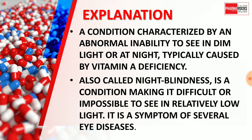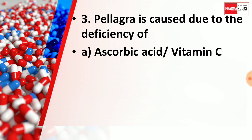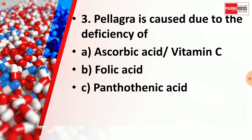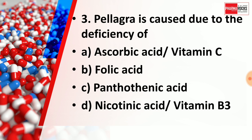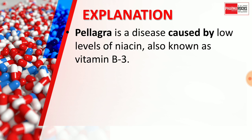Night blindness is a symptom of Vitamin A deficiency. The correct answer for question 3 is Option D, nicotinic acid — Vitamin B3. Pellagra is a disease caused by a low level of niacin, also called Vitamin B3.